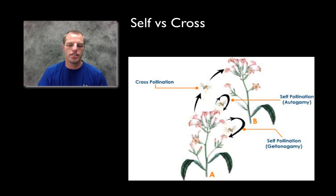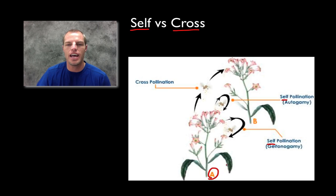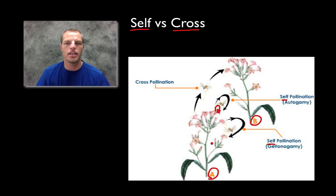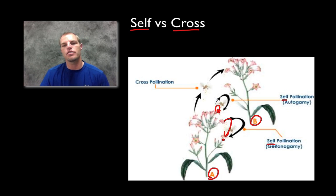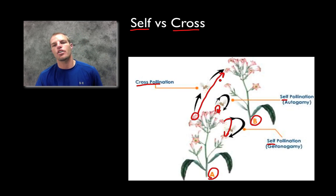Another aspect of pollination is the difference between self-pollination and cross-pollination. A plant can pollinate itself, or it can cross-pollinate over to another plant. In self-pollination, the pollen from a flower pollinates the female part of that same flower, or it can pollinate a different flower on the same plant. Cross-pollination is where pollen from one plant travels and fertilization occurs on a second, separate plant.